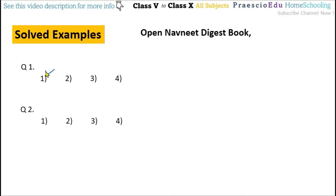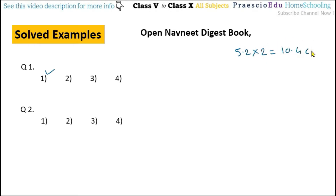Question number two: the radius of the circle is 5.2 centimeters. What is the length of the longest chord of that circle? The longest chord means diameter, and the diameter is two times the radius. So 5.2 multiplied by 2 equals 10.4 centimeters. This 10.4 centimeters is given in option number three.